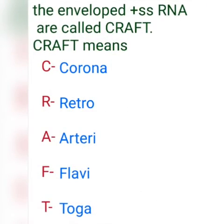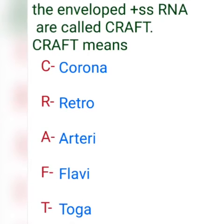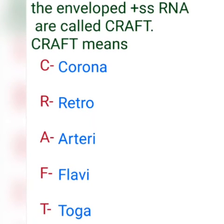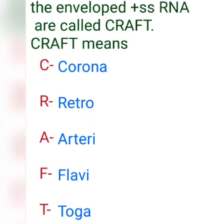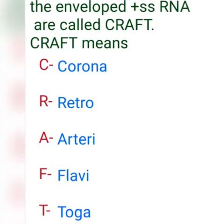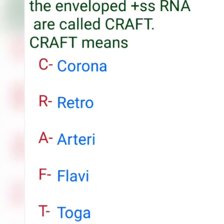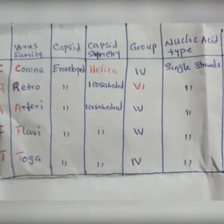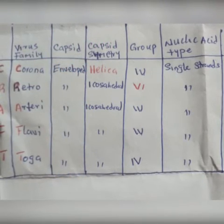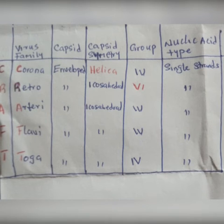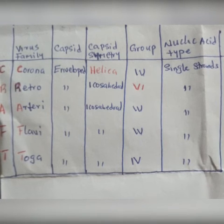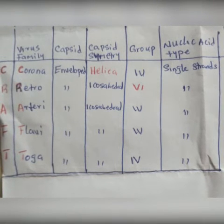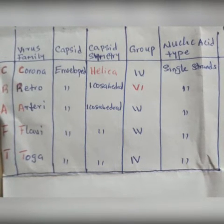The enveloped positive sense RNA are called Kraft. Kraft stands for: Corona, Retro, Arteri, Flavi, and Toga. They are all enveloped. They are icosahedral, except Corona. They belong to group 4, except Retro. They are single strand.